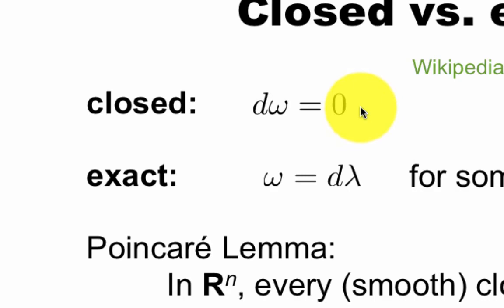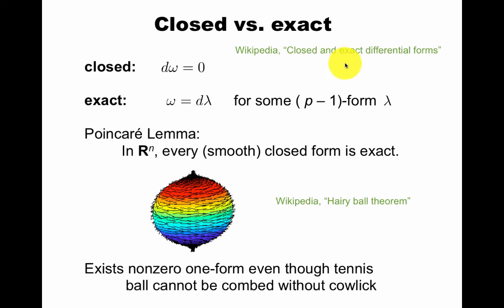Now, you might say, if I apply this to a form, is this equal to zero? And can any form be written as d of some other form? And the answer is, not always. This is a very nice page about this difference.